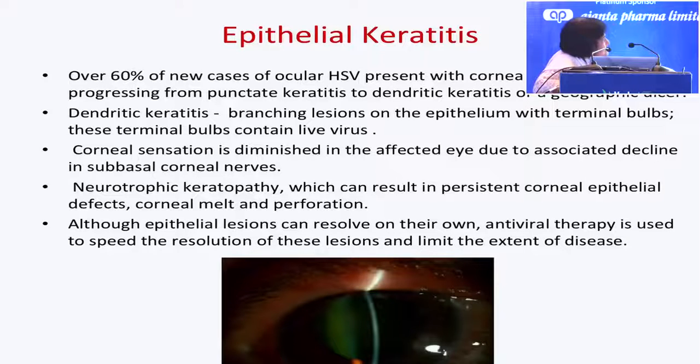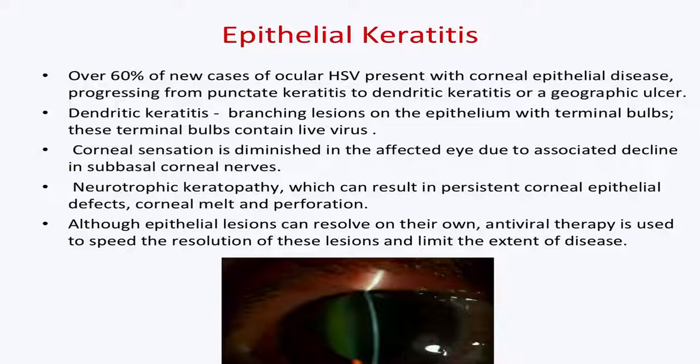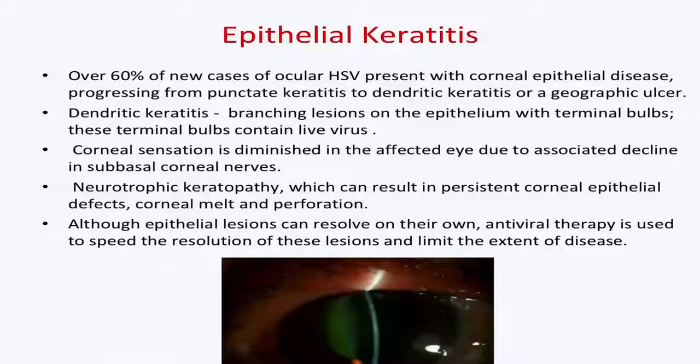How I look at viral keratitis: I have basically divided it into whether the virus is affecting the epithelium of the cornea, the stroma of the cornea, the endothelium, the underlying iris tissue, or a combination of all of these. If we go by the first part — epithelial keratitis — 60% of ocular HSV cases have a corneal epithelial disease, and typically it comes in the form of a dendrite.